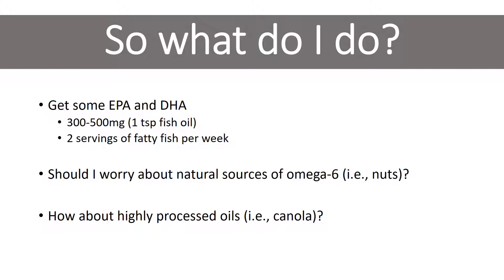Should you worry about natural sources of omega-6? I personally don't worry about natural sources like walnuts and almonds. Should you worry about highly processed oils like canola oil processed at high heat with chemical solvents? I'm a little more concerned about those — because of the high heat and chemical solvents — though I don't have a lot of direct research evidence to back that up. My recommendation: get some EPA and DHA from fish oil or fatty fish, don't worry too much about omega-6 in natural foods, but the highly chemically processed stuff is something you may want to minimize.